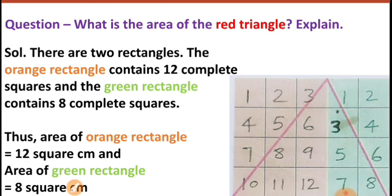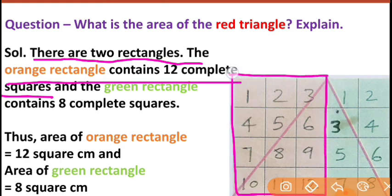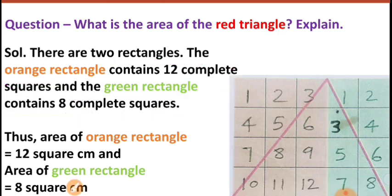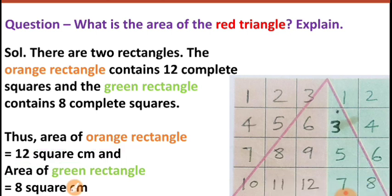The orange rectangle contains 12 complete squares — you can see 12 complete squares in it. The green rectangle contains 8 complete squares. So the area of the orange rectangle is 12 square centimeters, and the area of the green rectangle is 8 square centimeters. We have found the area of both rectangles. Now the main thing is to find the area of the triangle.